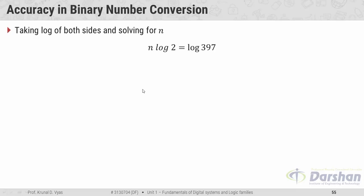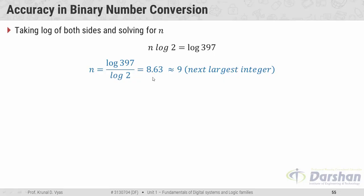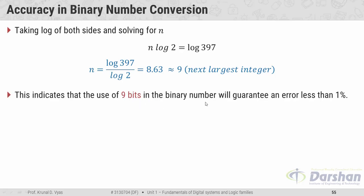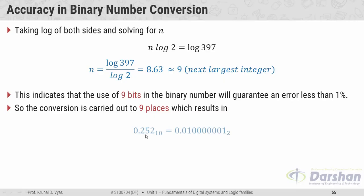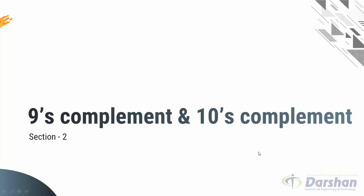Taking log on both sides: n × log(2) = log(397), so n = log(397) / log(2) = 8.63. Since n must be an integer, we round up to 9 — the next largest integer. This indicates that using 9 bits in the binary number will guarantee an error less than 1%. Converting 0.252 to binary gives 0.010000010 — nine places after the point.